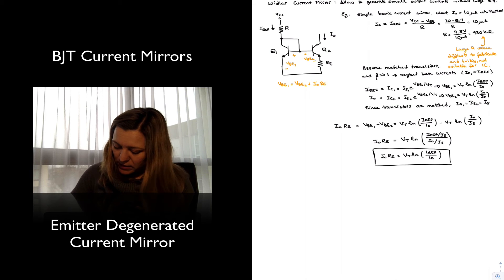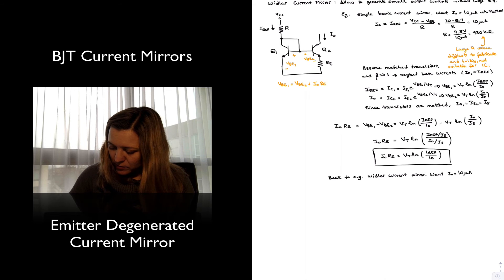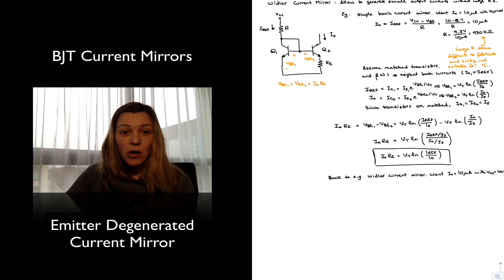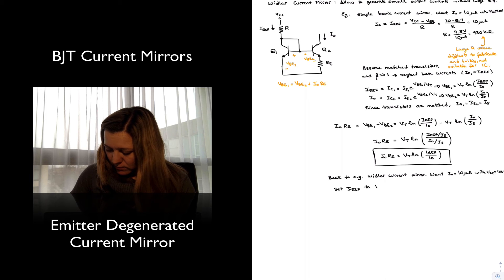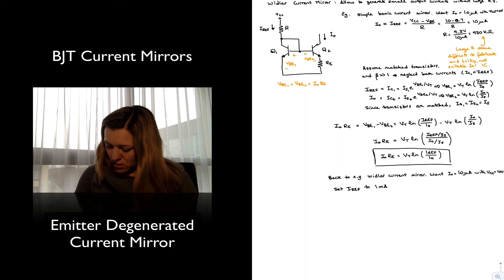So for this example, with a Widlar current mirror, I want an I_out of 10 microamps with VCC equals 10 volts. The good news here is that I can set, because of my resistor RE, my output current to be smaller than the reference current. And so I'm going to set my reference current I_ref to something like 1 milliamp, which is going to give me a reasonable value for resistor R. And now I just need to solve that equation.